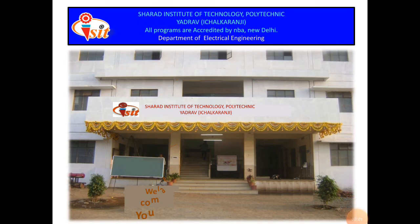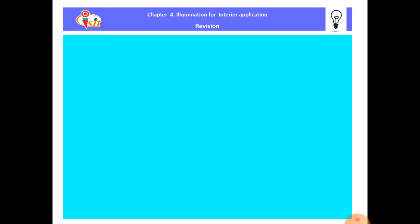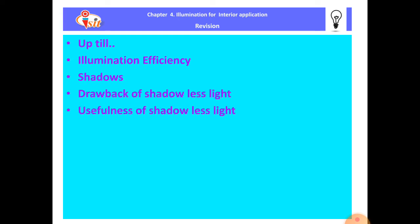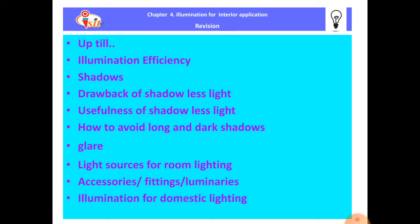Hello students, welcome to the illumination and electrification of building video lecture session. In the last videos, we learned about illumination efficiency, shadows, drawback of shadowless light, usefulness of shadowless light in the working plane, how to avoid long and dark shadows, glare, light sources for room lighting, accessories required for luminaires, fittings and luminaires used in residential premises, and illumination for domestic lighting.